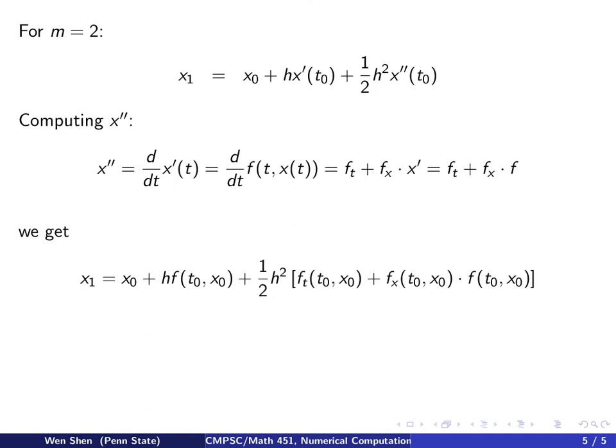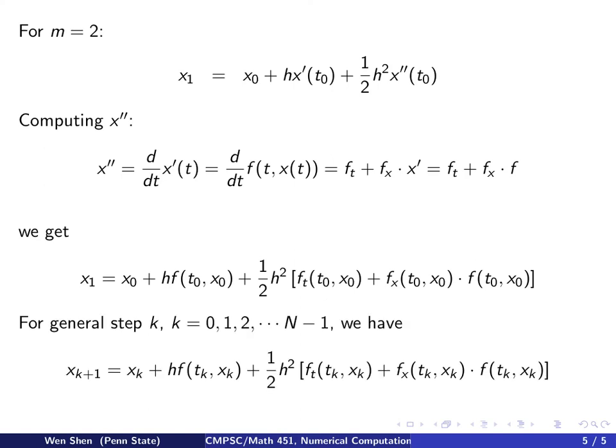Plugging this into the first equation, we have our iteration: x0 plus h times f at t0 x0, plus one half h square times this expression for the second derivative, but everything evaluated at t0 x0. You can also write out the iteration at the general time step, step number k, where k is the index for your for loop to go through all the time intervals. We will have on the left-hand side xk plus 1, and on the right-hand side, all the x's will be evaluated at xk and tk.